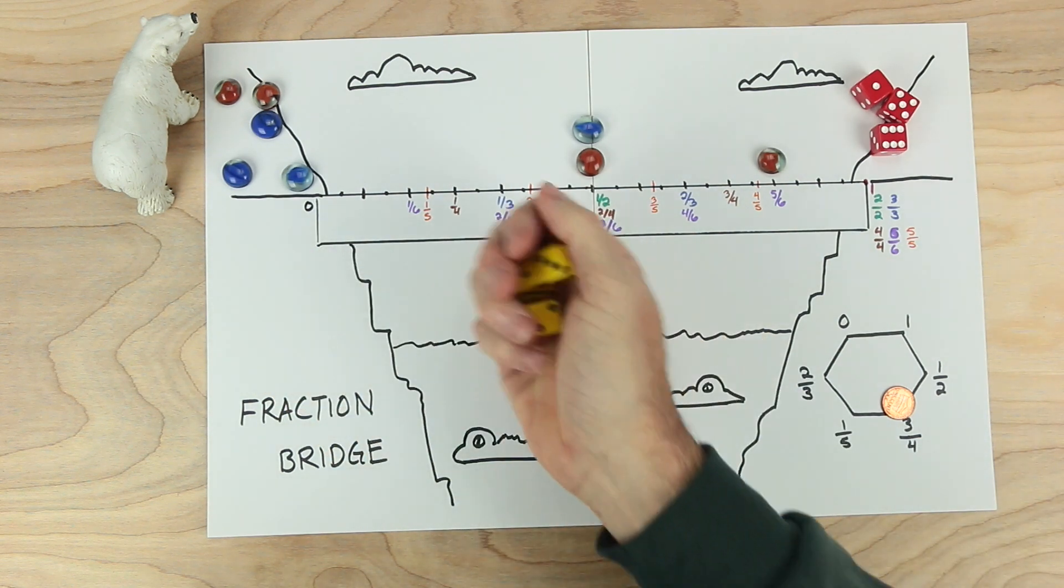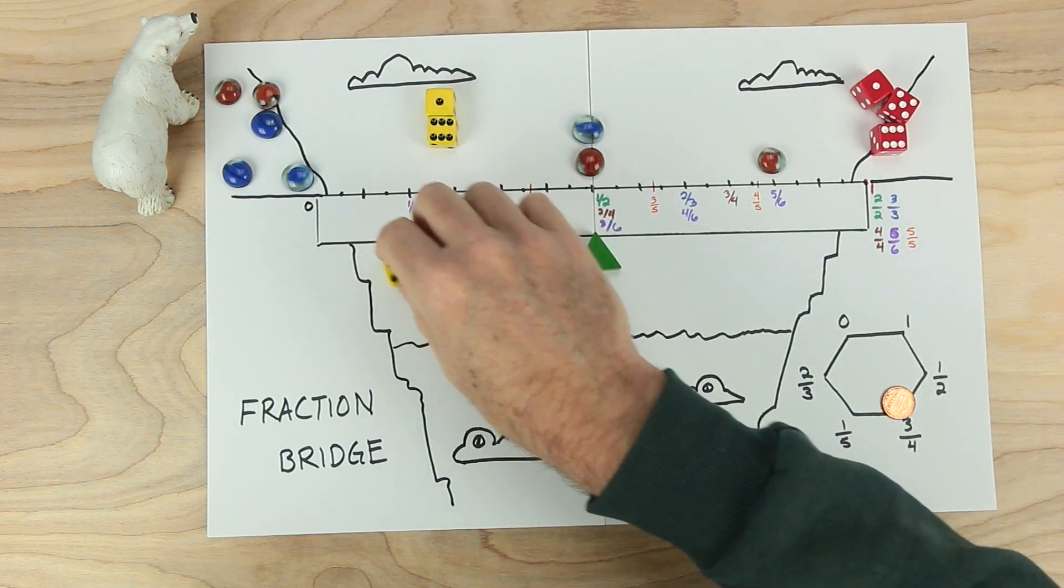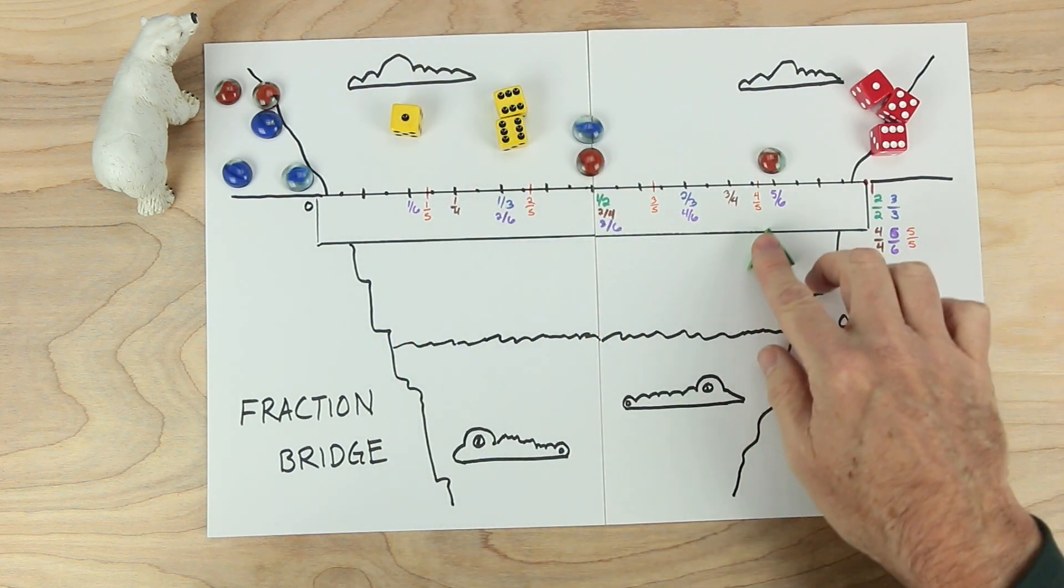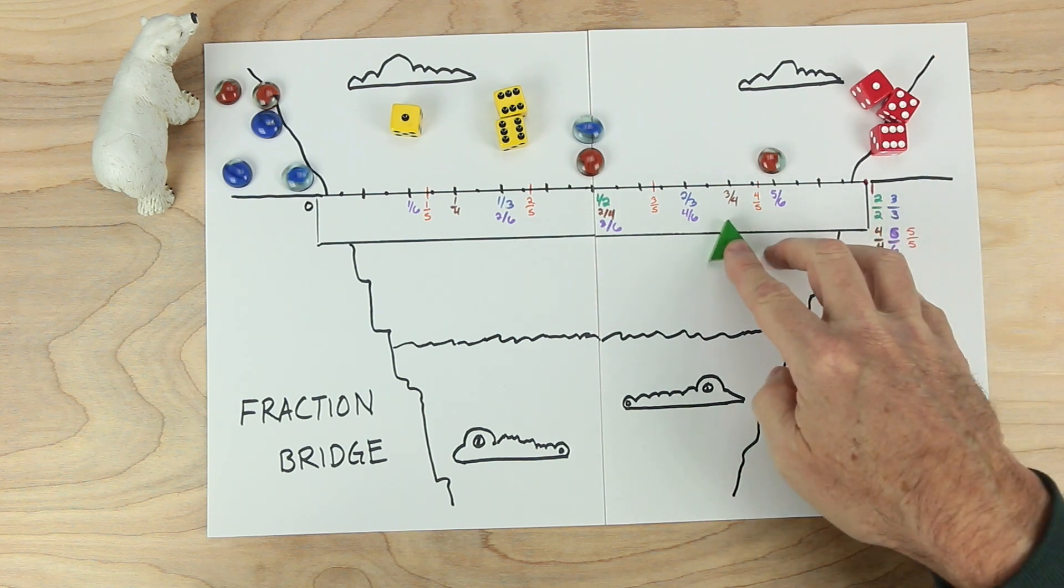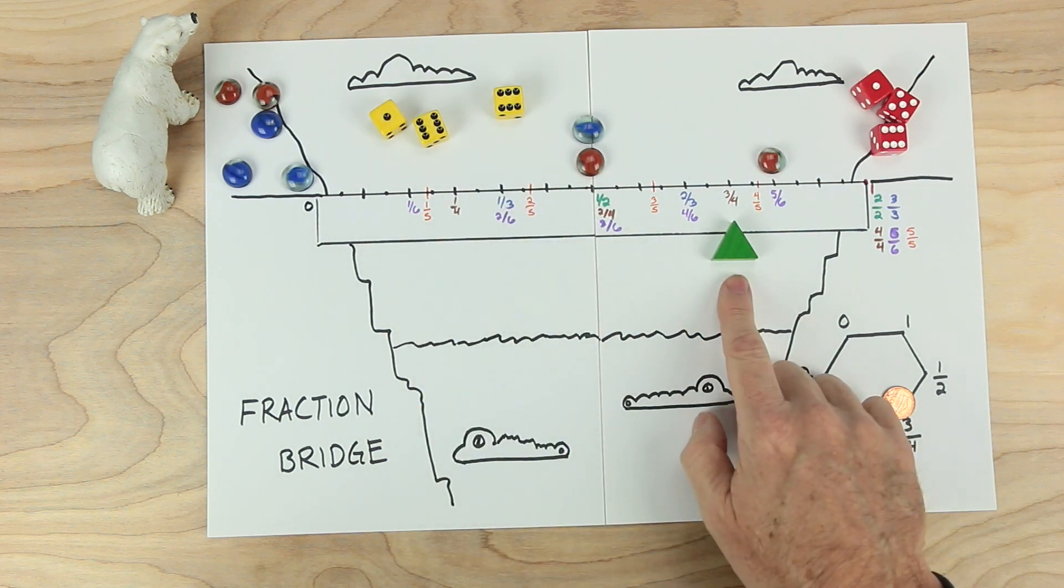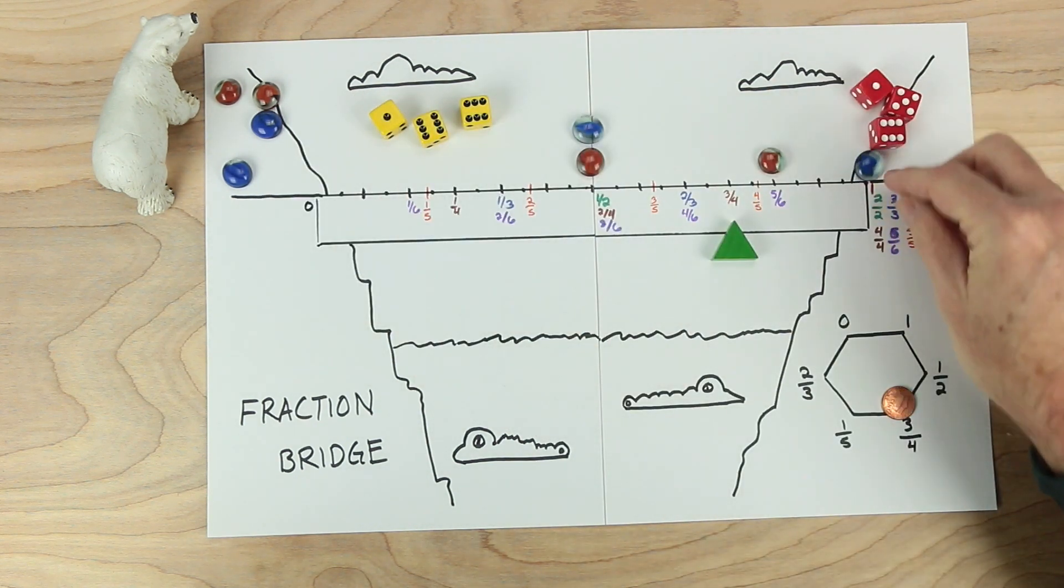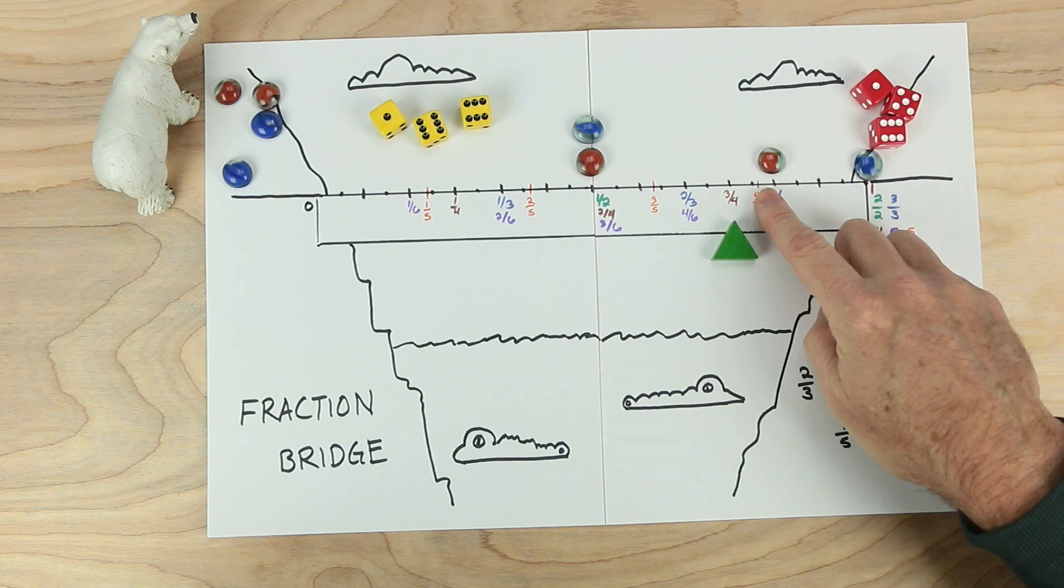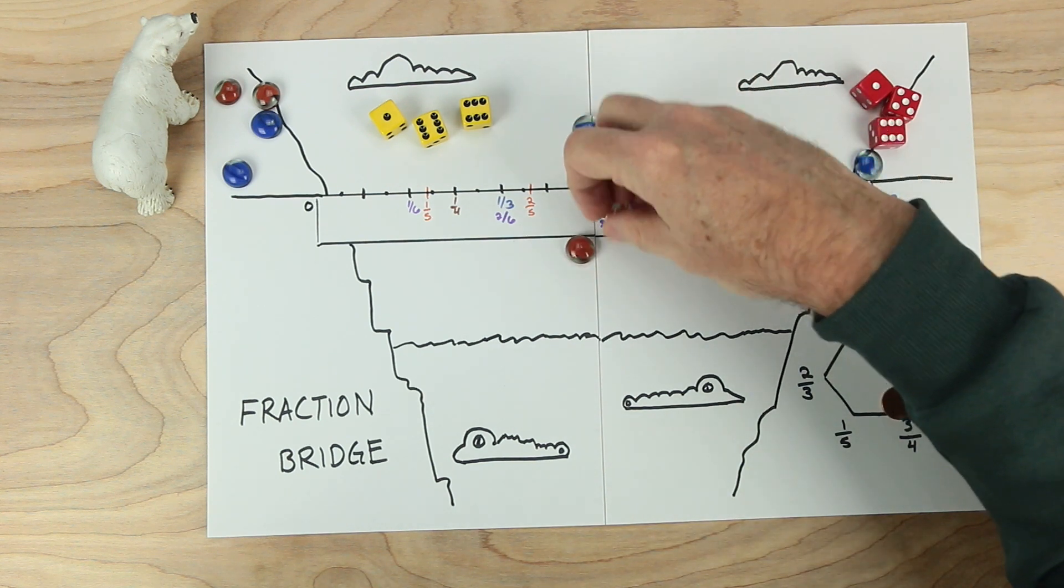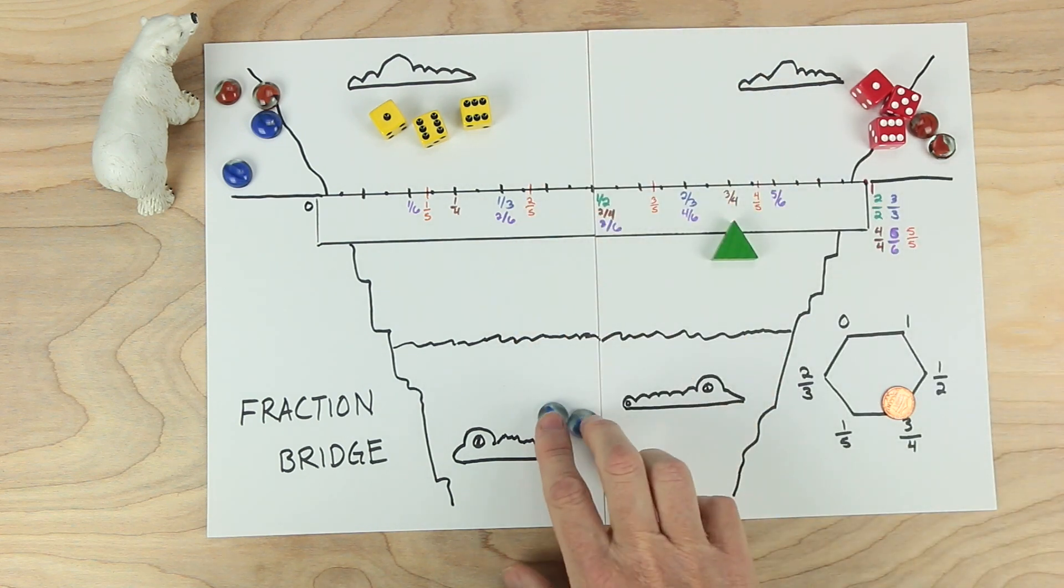Blue takes a turn. Blue has one and six. Could be one sixth. The other possibility is six sixths. Now, one sixth is over here, and we're trying to get all the way to three fourths. Three fourths is the number that matters. One sixth is over here. That's not close enough. Six sixths is a lot closer. So blue puts a piece over here. But look, red is closer. So red's pieces, since red wins this round, red's pieces get to cross the bridge. Blue's pieces have to go back, trying not to get eaten by the crocodiles.